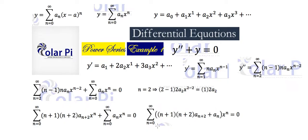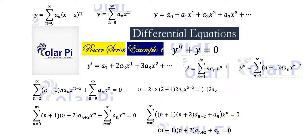Clearly, the way to get this left side to equal zero is to get what's multiplying x to the n — all of this — to equal zero. If we get this to equal zero, then we get zero times x to the n, and the sum from n equals zero to infinity still equals zero. So we need just this coefficient part to equal zero. Setting the coefficient equal to zero, we get this equation. Solving for a sub n plus two, we see that a sub n plus two is related to a sub n — in particular, a sub n plus two equals negative a sub n divided by the quantity n plus one times n plus two.